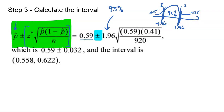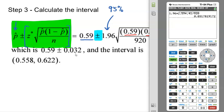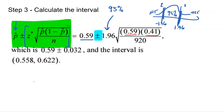The standard error for a sample proportion is the square root of P-hat times (1 − P-hat) divided by n. So inside the square root: 0.59 times 0.41, divided by 920. Multiplying 1.96 by that entire square root gives 0.032 — that's our margin of error. Adding 0.032 to 0.59 gives the top of our interval: 0.622. Subtracting 0.032 from 0.59 gives the bottom: 0.558. So our confidence interval is 0.558 to 0.622.